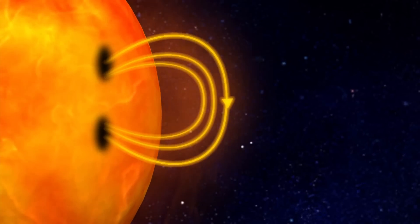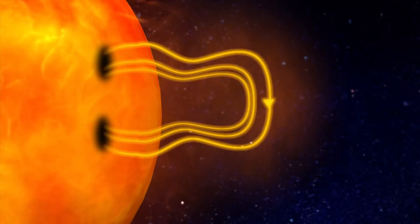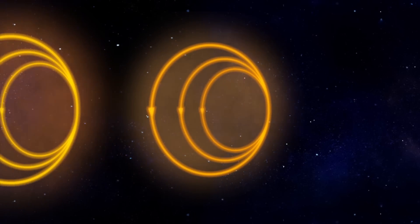Solar winds are blasts of plasma hurled from the upper atmosphere of the sun. Solar winds consist of slow and fast streams.